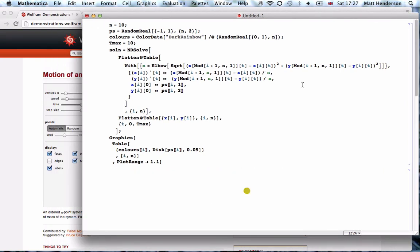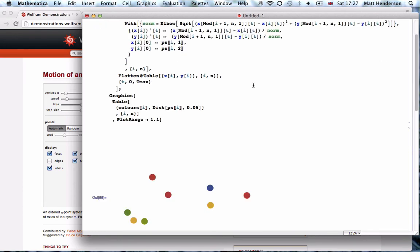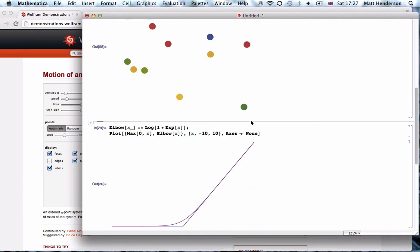It was a silly mistake. I used the variable n in two different places, one for the number of points and one for the norm of each difference vector. I should call this norm instead of n. Running it gives no errors.